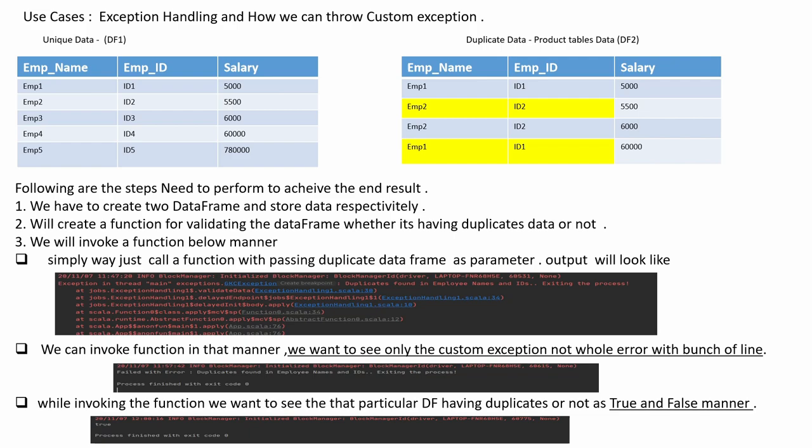We have two DataFrames: one with unique data and another with duplicate data. I have highlighted that these two records are duplicates — employee name and employee ID are duplicates. For achieving this particular exception handling and throwing a custom exception, we need to perform certain steps.